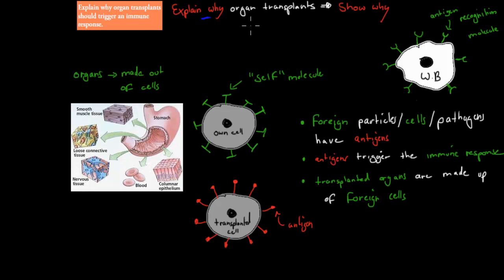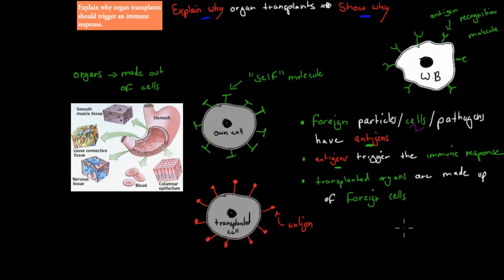Next, we need to explain why organ transplants trigger an immune response. Foreign particles, cells, or pathogens all have antigens, and those antigens trigger the immune response when detected. Transplanted organs are made up of foreign cells, and foreign cells have antigens. So when you put an organ into someone, those foreign cells have, according to our immune system, invaded our body. They are detected by white blood cells, the antigens trigger the immune response, and the organs will actually be attacked and destroyed by our own immune system.